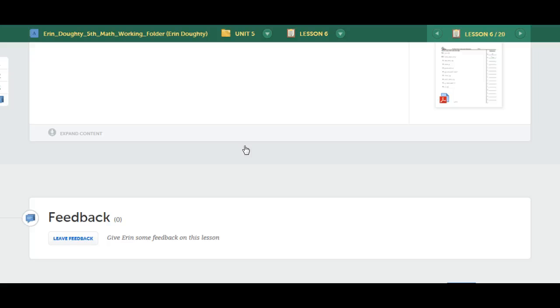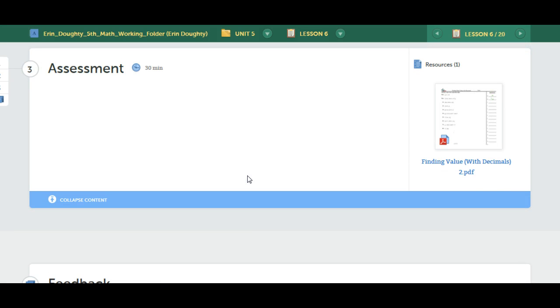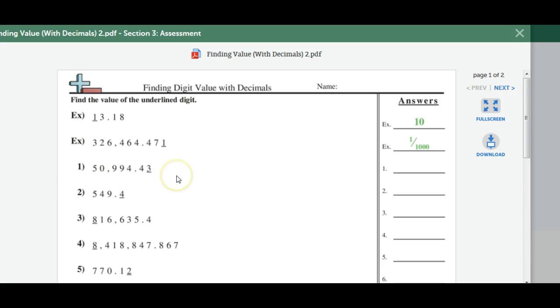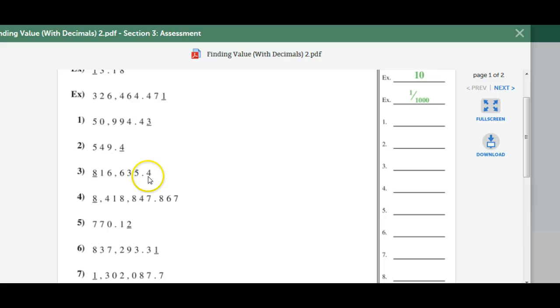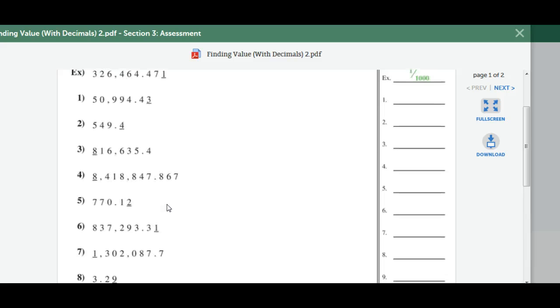Ending the targeted skills group up, they complete an assessment where again they're finding the value of the underlined digit. So it not only goes over decimal places but it also goes over whole number places, which is a good built-in review for the students.